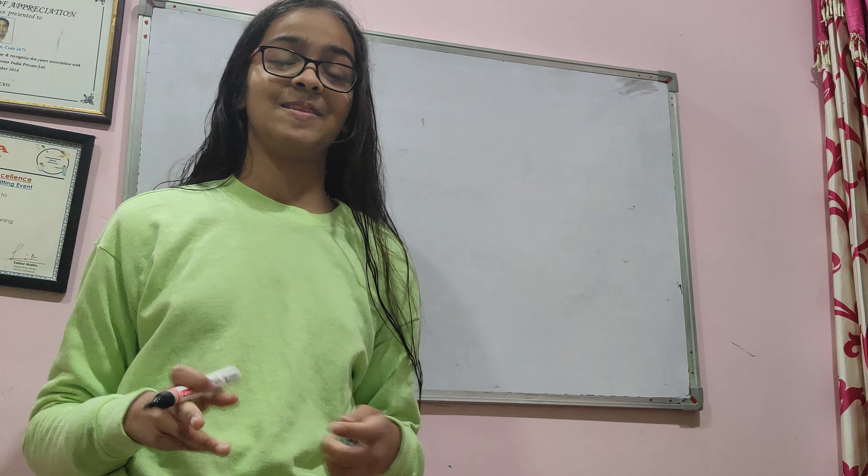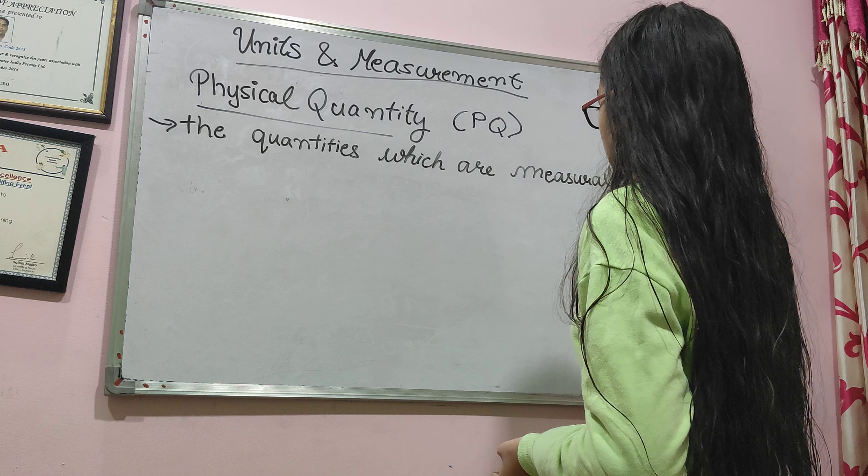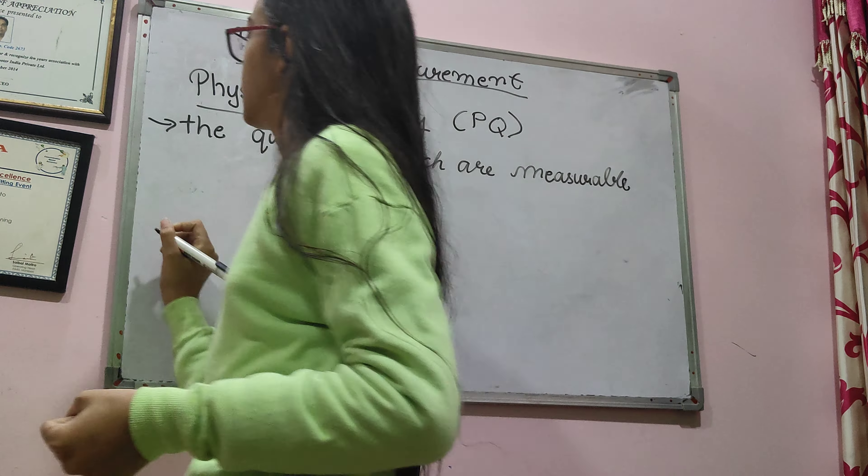So what is physical quantity? Physical quantity refers to the quantities which are measurable. Physical quantities are the quantities which are measurable and also which describe the laws of the physical world. So these are the two key points for the definition of physical quantity.